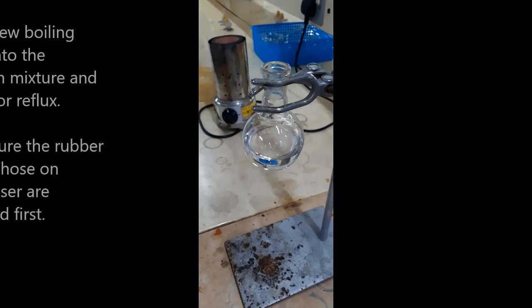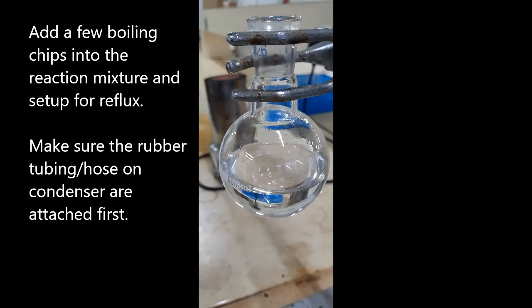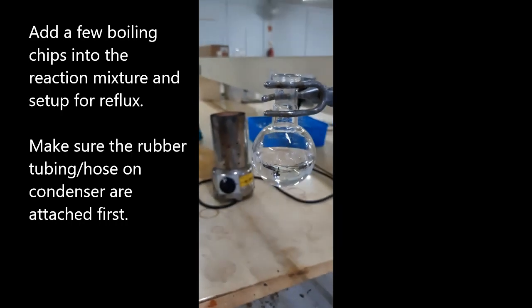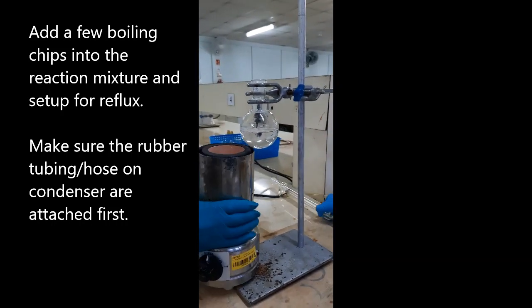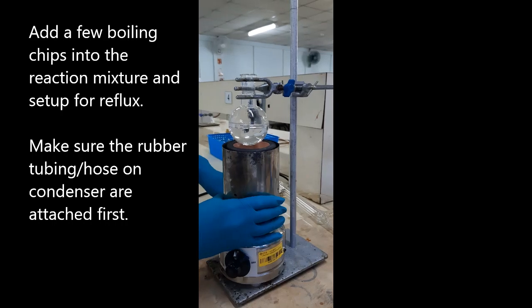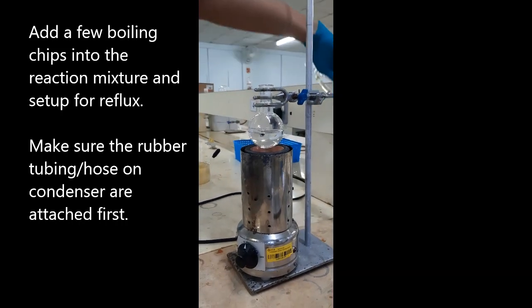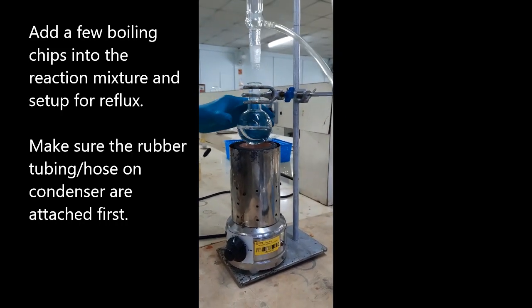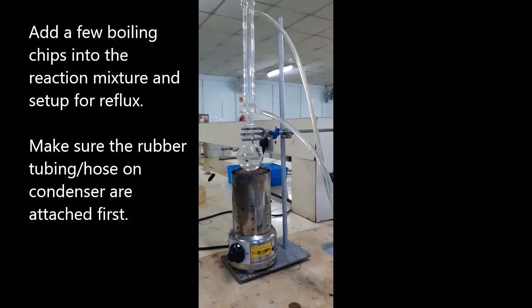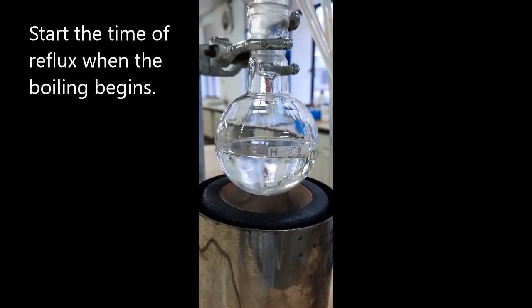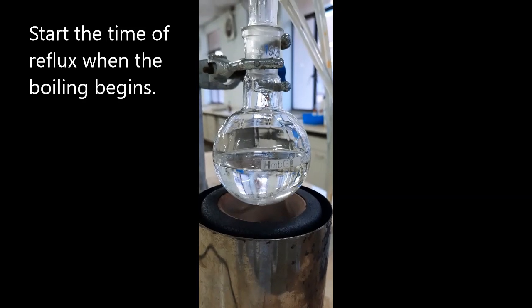Boiling stones must be added when heating organic liquids in the round bottom flask. Then assemble the apparatus for the following reflux process. Always attach the rubber tubing first to the condenser before assembling the distillation setup. The reflux duration only begins when the mixture starts to boil.